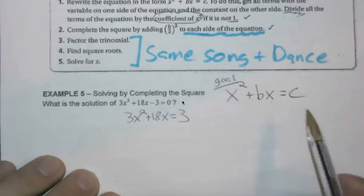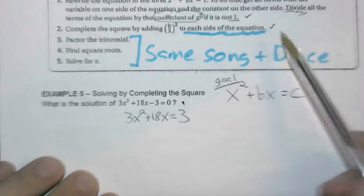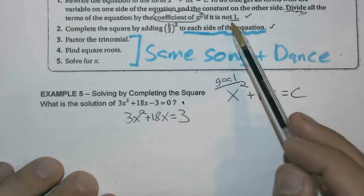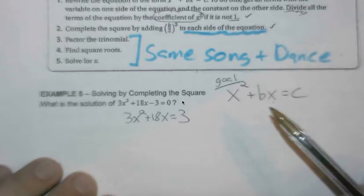And how could we go about getting rid of this 3? Because keep in mind, if our a coefficient's not 1, we need to do something. So what can we do?